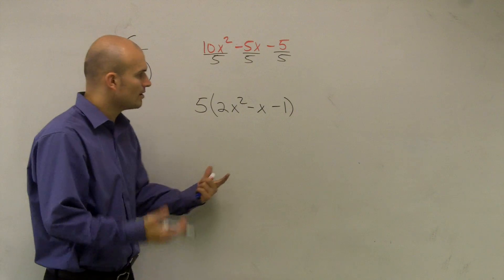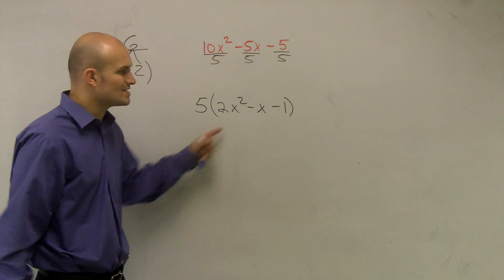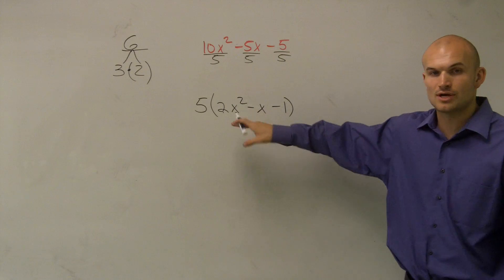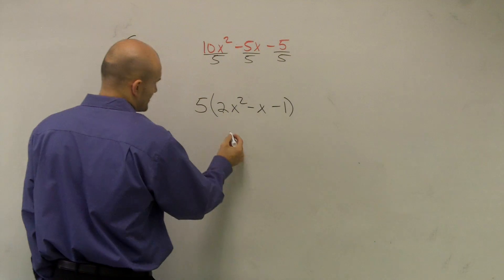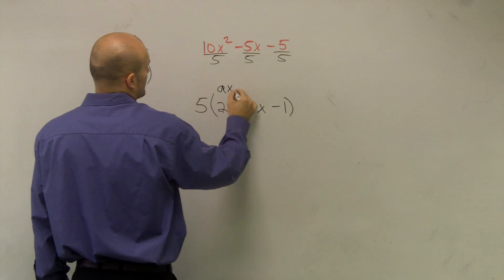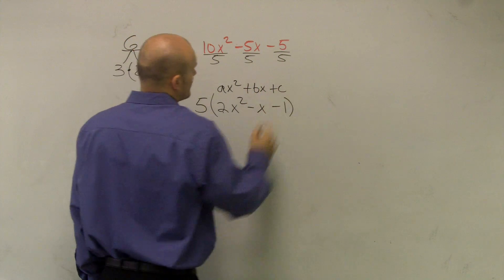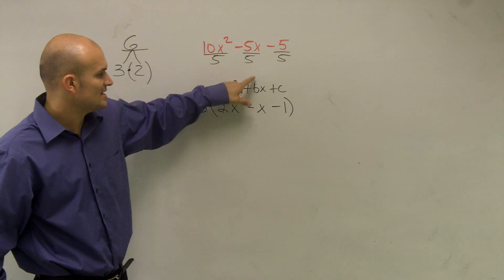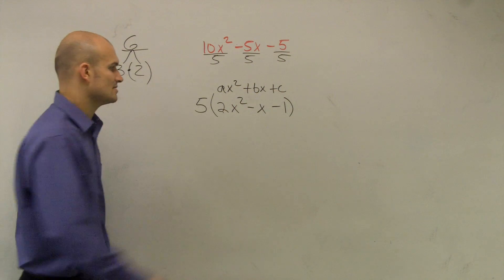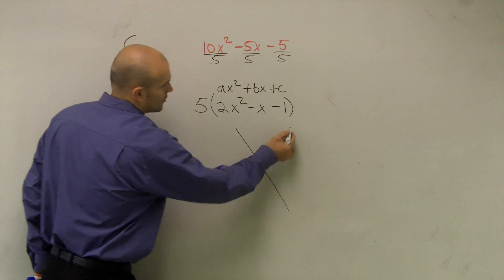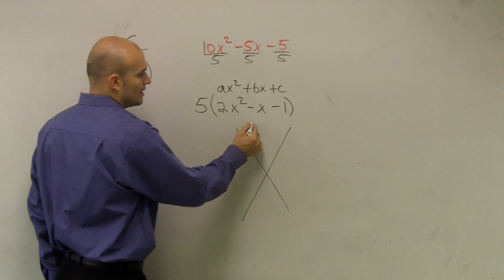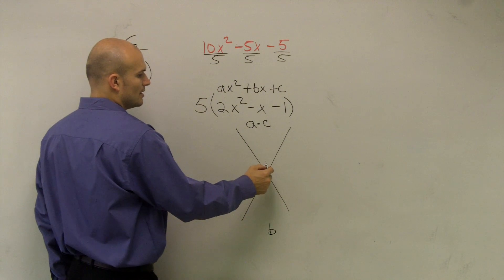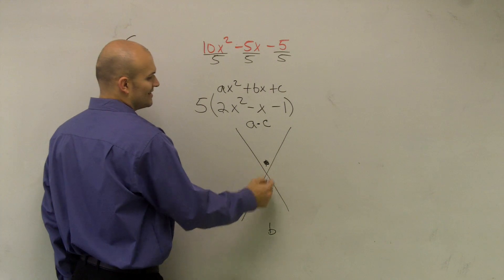Now I look at this and see I still have a coefficient of 2 in front of x squared, which I cannot simply factor out. So I'll use the AC method. We write our trinomial in quadratic form: a is the coefficient of x squared, b is the coefficient of the linear term, and c is the constant. When a is greater than 1, I need to multiply a times c and put b on the bottom — then I'll multiply and add.